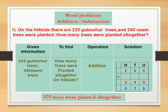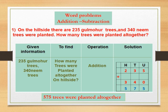Solution: here we draw the columns — 100s, 10s, and units — and write the numbers: 235 plus 340. We first add from units place: 5 units plus 0 = 5. Then 10s place: 3 plus 4 = 7. Then 100s place: 2 plus 3 = 5. Our answer is 575. Total number of trees, 575, were planted in the nursery. एकूण पाचशे पंच्याहत्तर झाडे रोपवाटिकेत लावली.